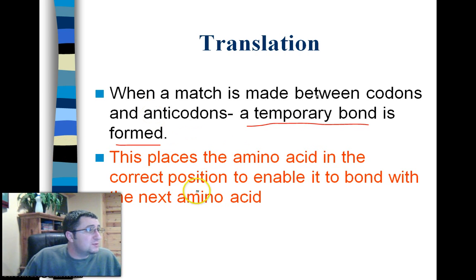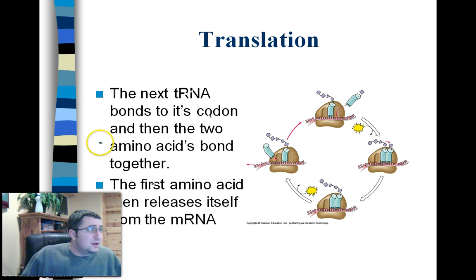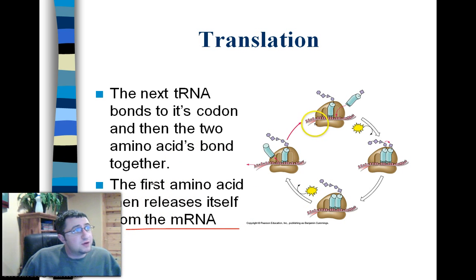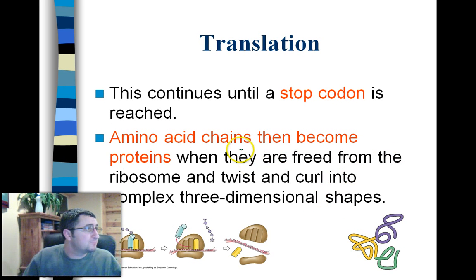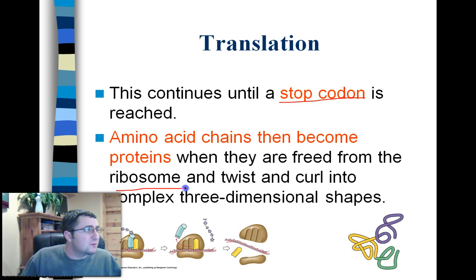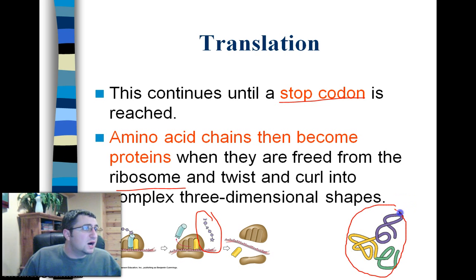When a match is made, a temporary bond is formed where the tRNA and the mRNA are stuck to each other. This places the amino acid in the correct position to enable it to bond to the next amino acid. The next tRNA bonds with the codon, and then two amino acids bind together. The first amino acid then releases itself from the mRNA. We have the mRNA with all those codons on it, and the tRNA comes swooping in bringing an amino acid, giving us this growing peptide chain. That chain will grow and grow until it's hundreds or thousands of amino acids long and eventually becomes a protein. It continues until we reach a stop codon, and amino acid chains become proteins when they are freed from the ribosome and twist and curl up.